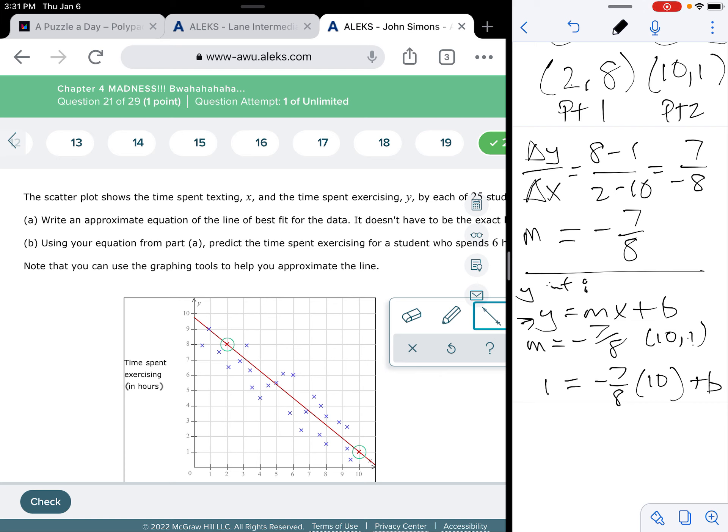My y is 1. So, I have 1 equals negative 7 eighths times 10 plus b. So, we have 1 equals, I'm going to do some cancellation here. So, we'll turn the 10 into 5, turn the 8 into 4 because I divided both by 2. Negative 7 times 5 is negative 35 over 4 plus b.